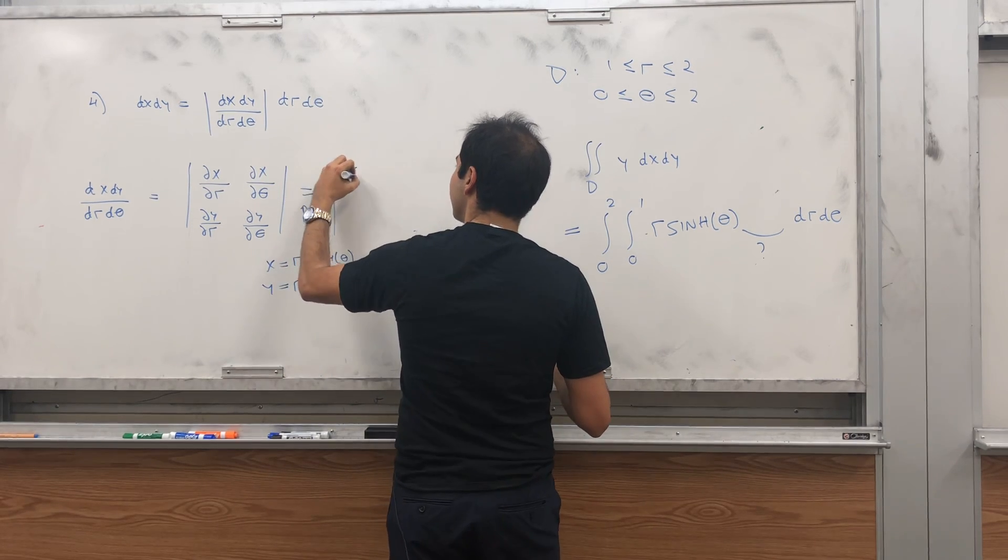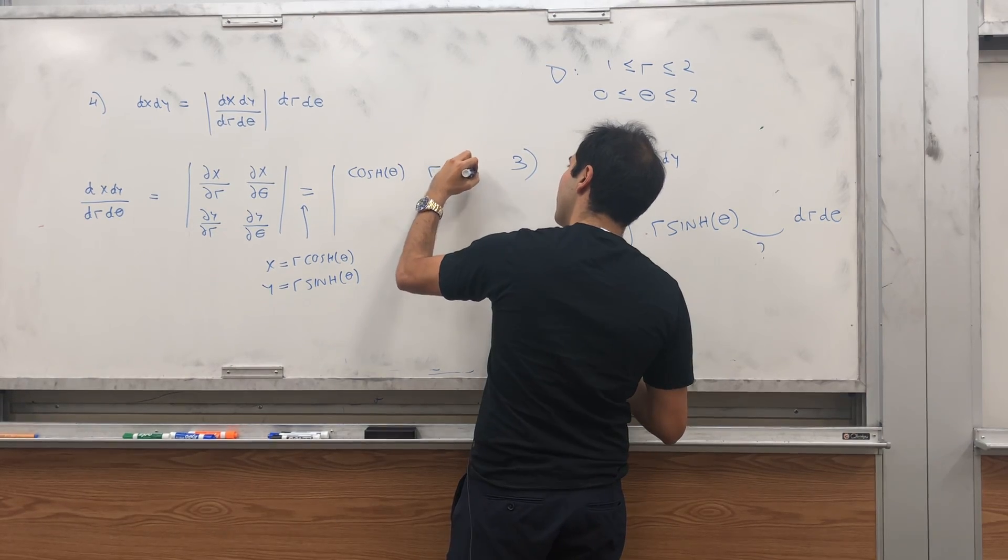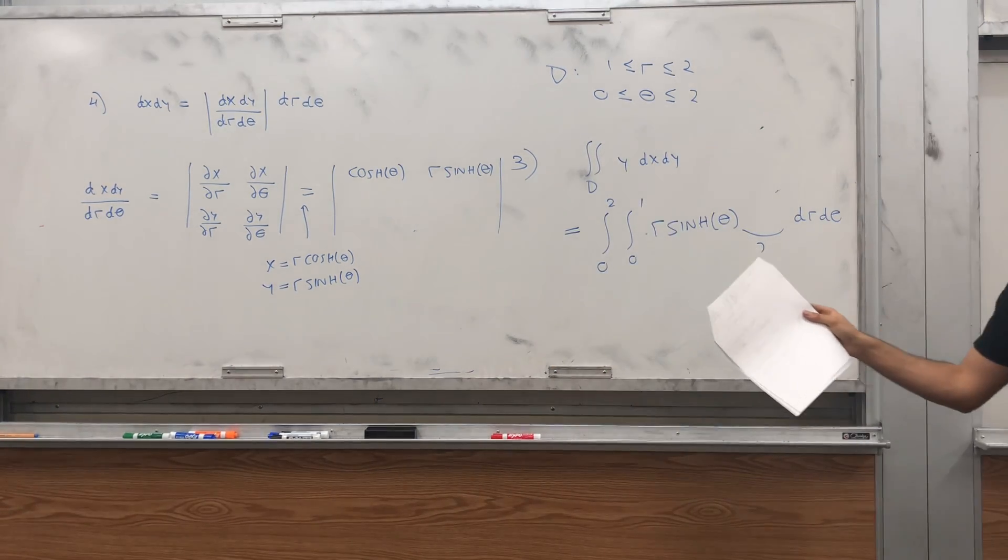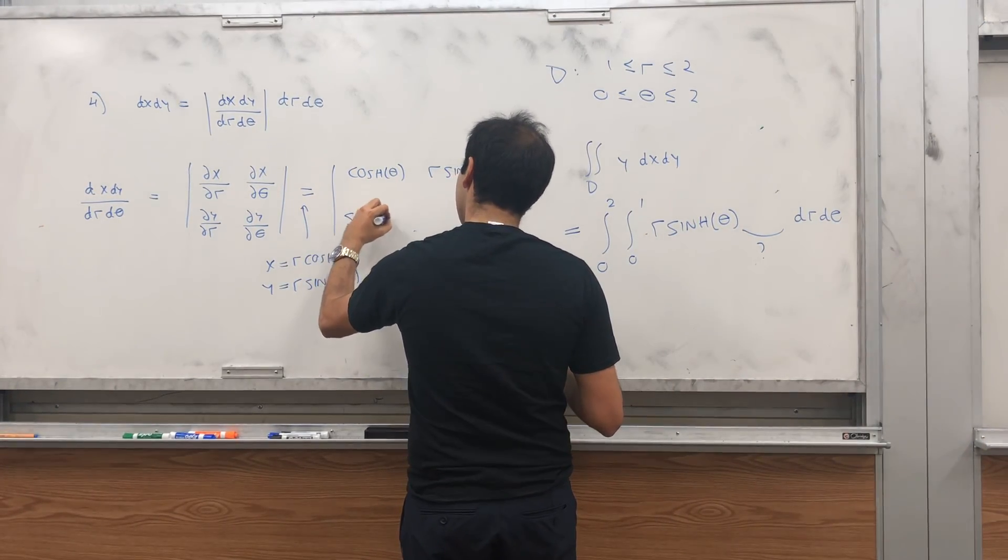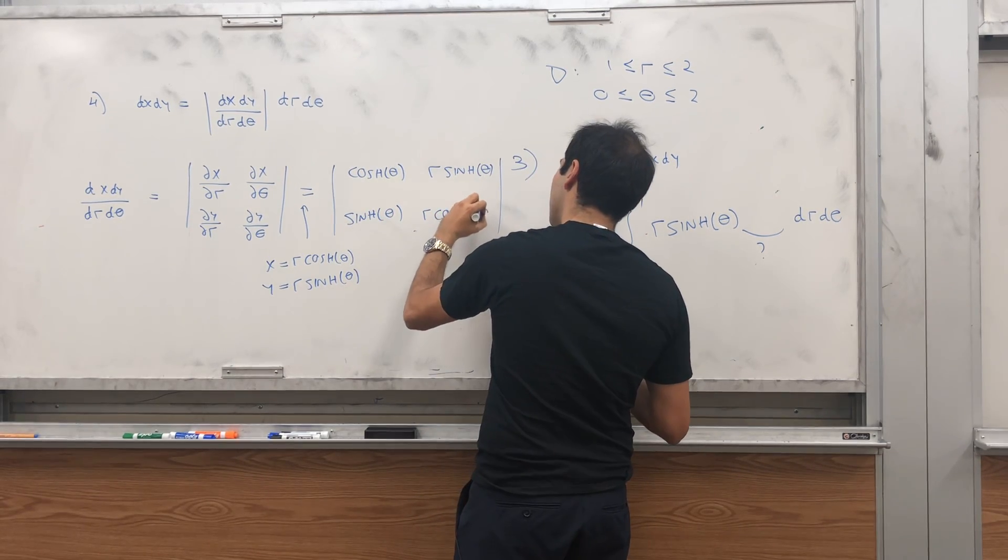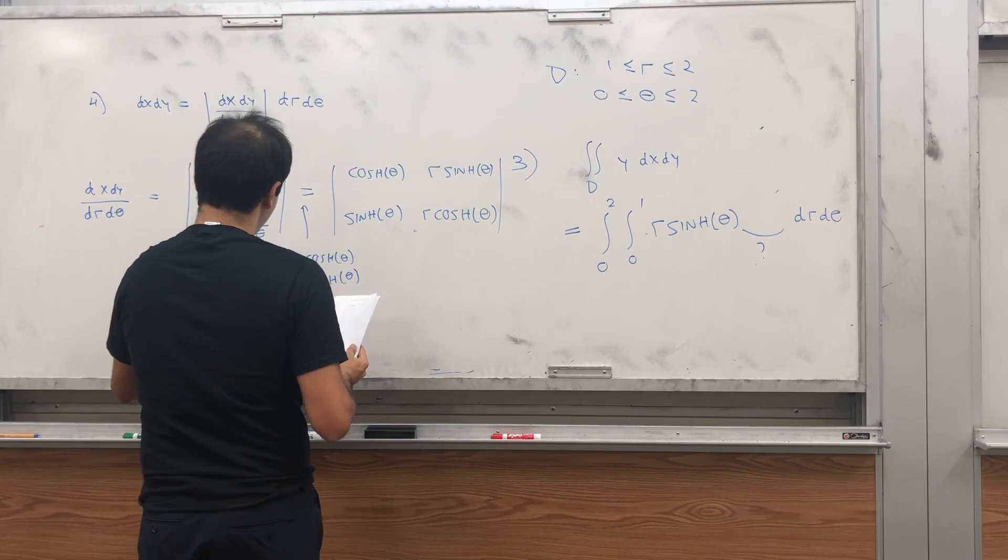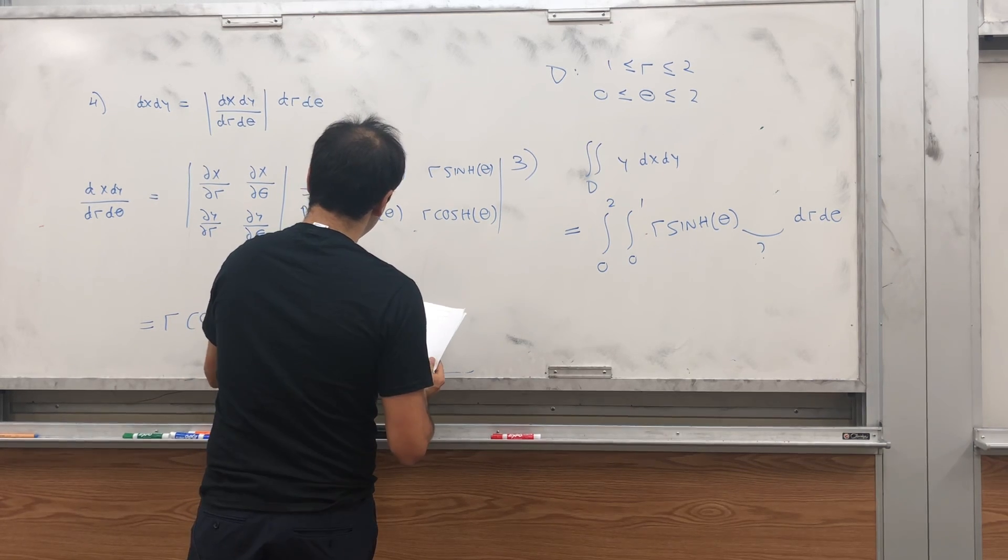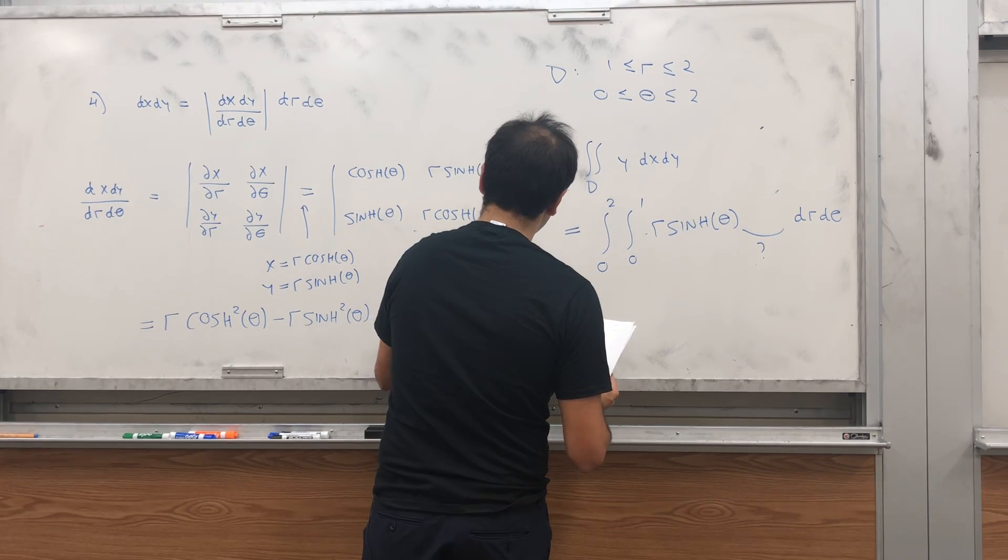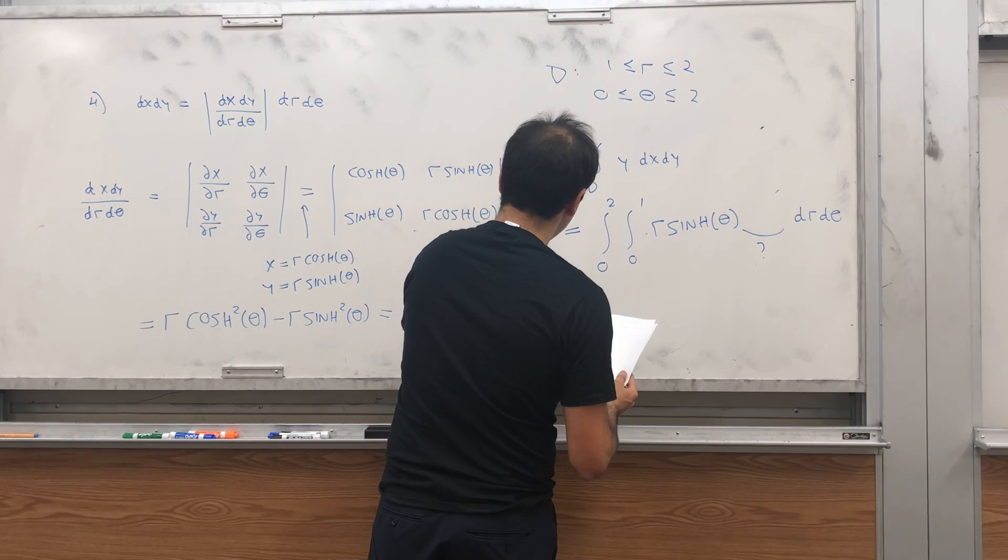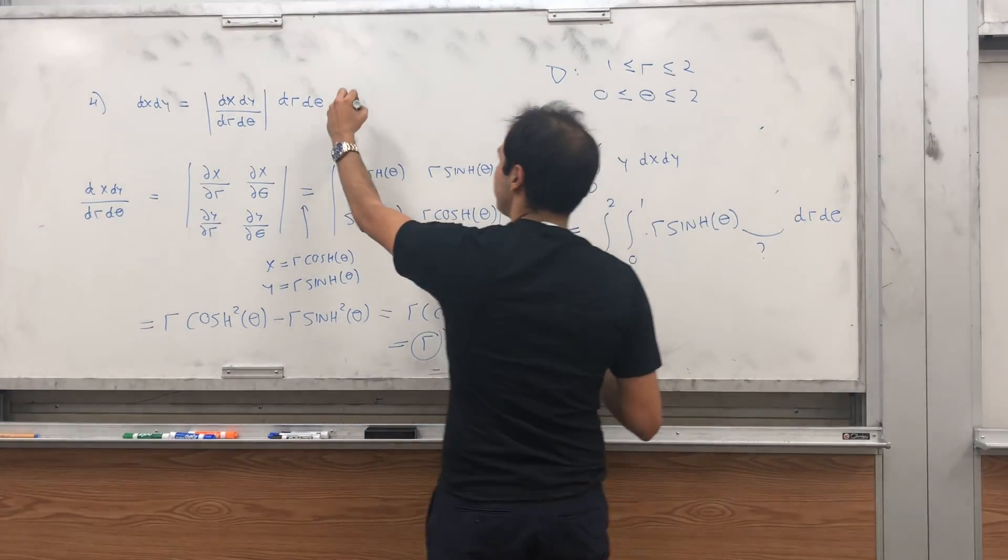So dx dr is cosh of theta, dx d theta is r sinh of theta. So careful. The derivative of cosh is sinh not minus sinh. And then sinh of theta and then r cosh of theta. And then what you're left with is r cosh squared of theta minus r sinh squared of theta. So it's r cosh squared of theta minus sinh squared of theta. And then it's just r.